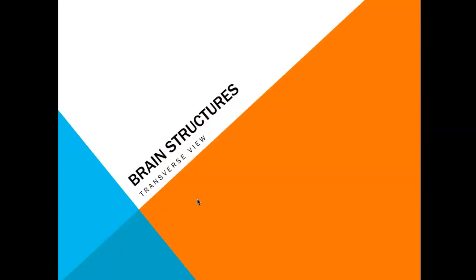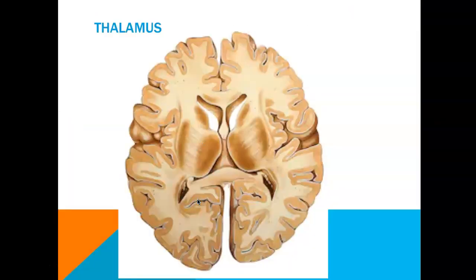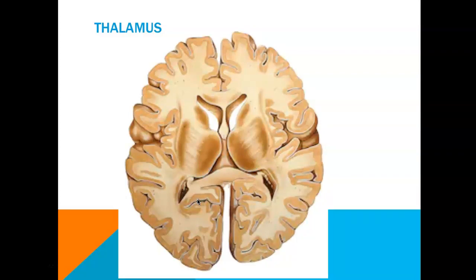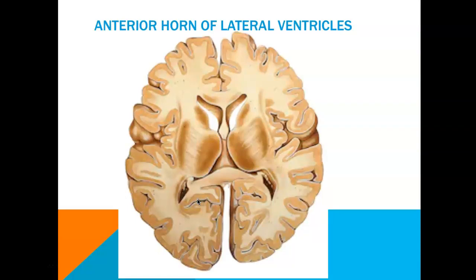Now let's look at some brain structures in a transverse cross section of the brain. We have sliced the brain in the transverse plane. The first structure we can see here is your thalamus, located more toward the midsagittal plane. It appears gray because we find many nuclei within the thalamus. Next we have the anterior horn of the lateral ventricles — ventricles are spaces found within the brain.